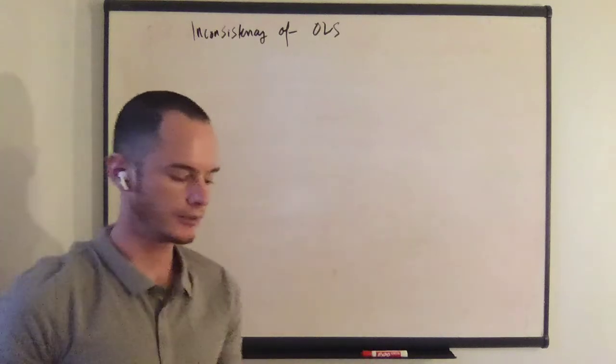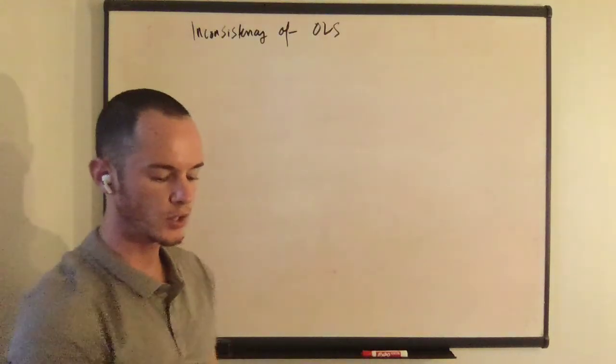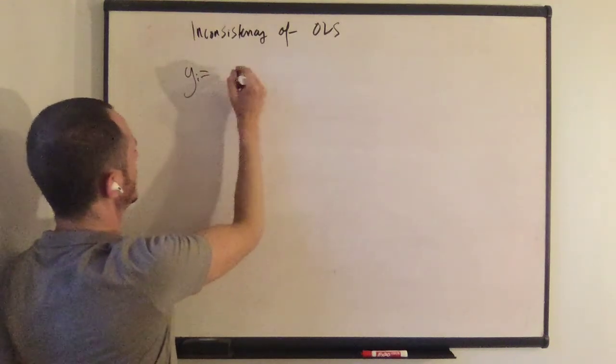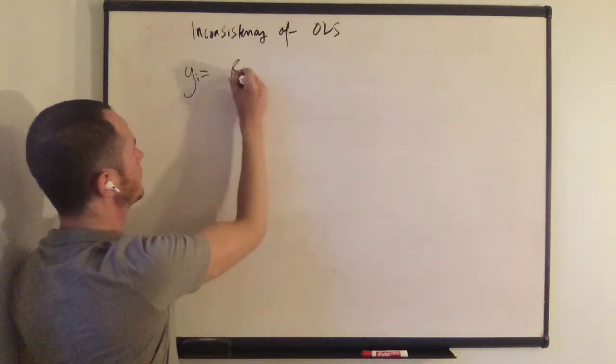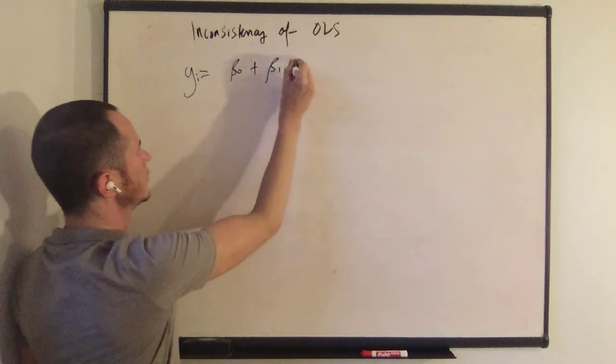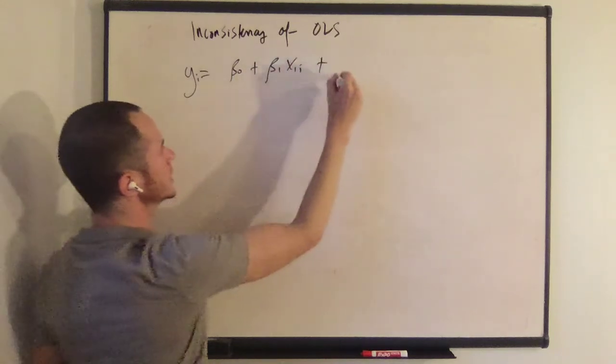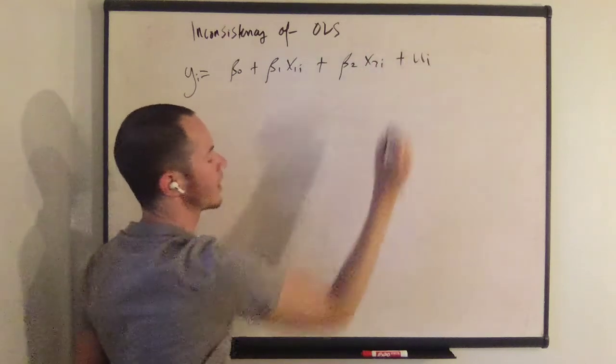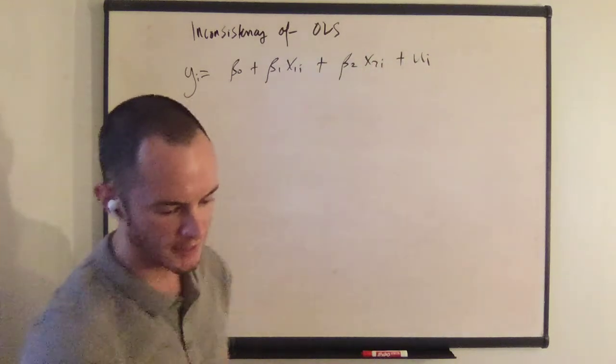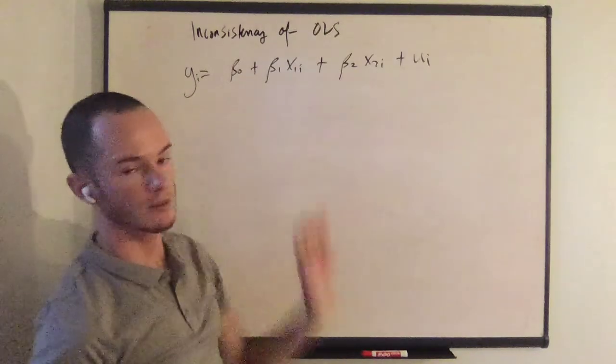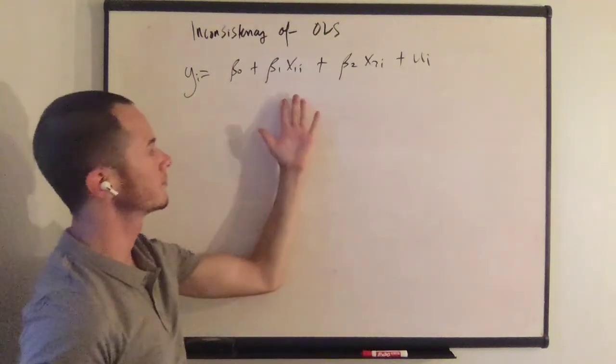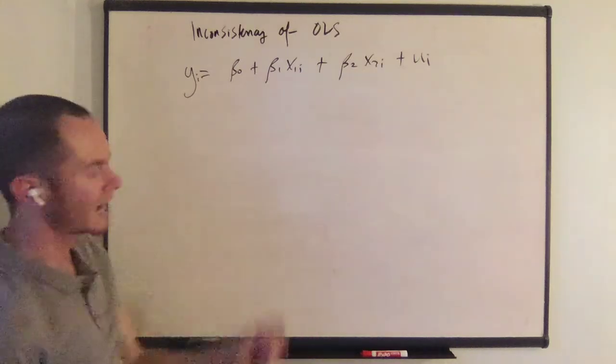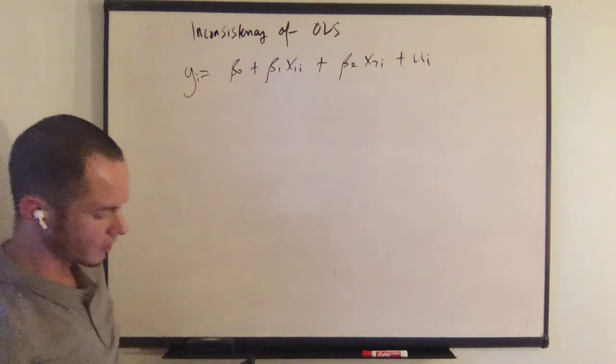If we consider a two variable population model, yi equals beta naught plus beta 1 x1i plus beta 2 x2i plus ui. Assume that this is the population model. Both of these variables enter the population regression function and these two coefficients are non-zero. Beta 1 and beta 2 are non-zero.